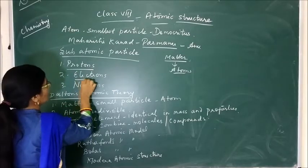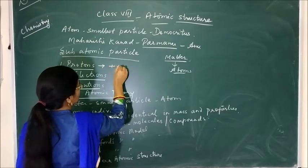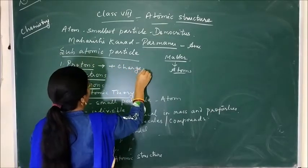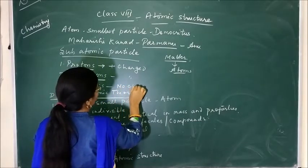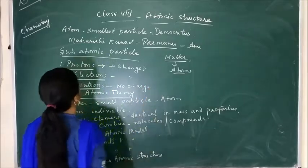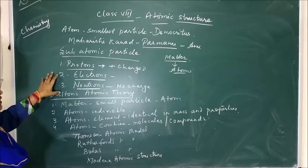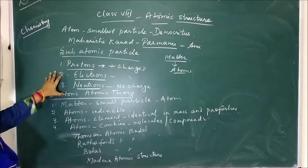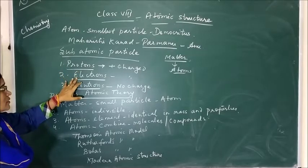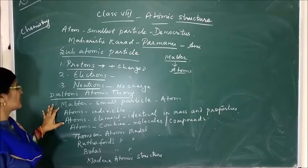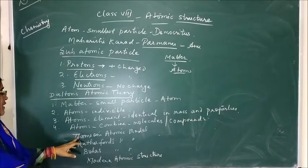The subatomic particles are called protons, electrons, and neutrons. Protons are positively charged, electrons are negatively charged, and neutrons have no charge — neither positive nor negative. These are the sub-divisible particles, as also described by Democritus, who said that the atom is divided into protons, electrons, and neutrons. In this chapter we will study different atomic models given by different scientists.